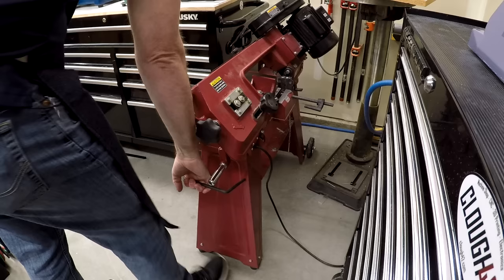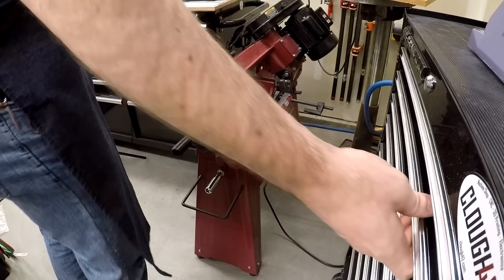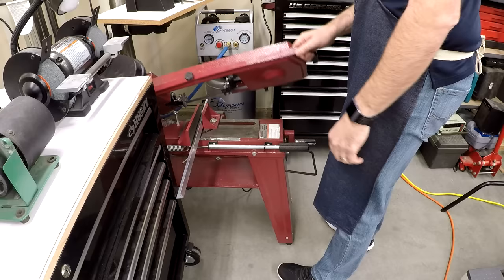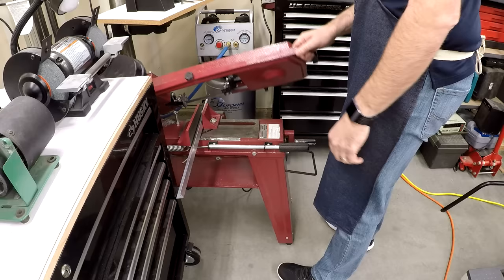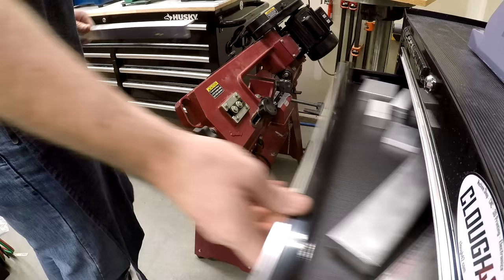Starting out the list at number 10 is my 4x6 bandsaw. It just lives back here between a couple of pieces of equipment underneath the drill press table. And I only have to pull it out about this far, and I can use it to cut off stock to start a project. So virtually every project starts here. Slide in my material, clamp it down, make my cut, and I've got my rough cuts for my material to go over to the mill or whatever other tool I'm going to be using.